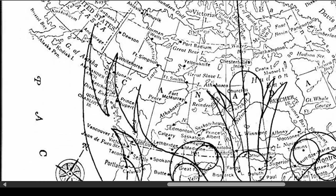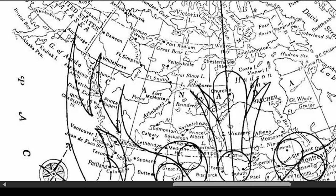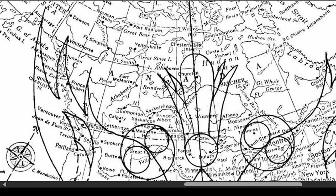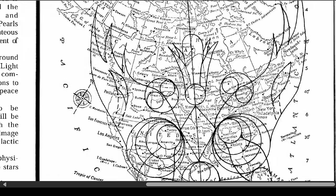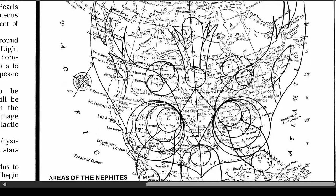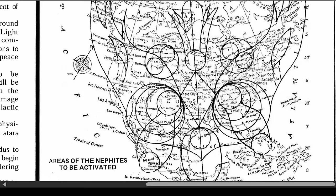Scripture talks about people who escaped to that part of the world — how during or before the tribulation they will use their money to leave the Americas and go to a more peaceful land. But what it says is that they are going to miss out on the blessings that are going to occur here in the promised land — this is the new world. They'll be stuck in the old world.